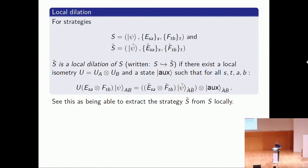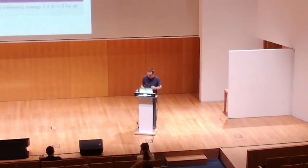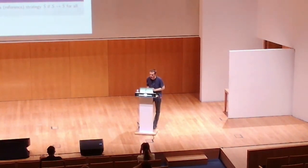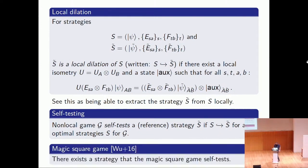Self-testing is then defined as follows: a game self-tests a reference strategy s-tilde if, for all optimal strategies, s-tilde is a local dilation. In other words, s-tilde is essentially the only way to achieve the optimal winning probability. The magic square game is an example of such a game — there exists a strategy that the magic square game self-tests, meaning it is essentially the only strategy you can use.